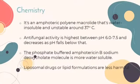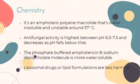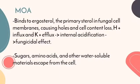Amphotericin B is an amphoteric polyene macrolide that is water-insoluble and unstable around 37 degrees Celsius. Its antifungal activity is highest between pH 6 to 7.5 and decreases as pH falls below that. One of its modes of action is that it binds to ergosterol, the primary sterol in fungal cell membranes, causing holes and cell content loss.